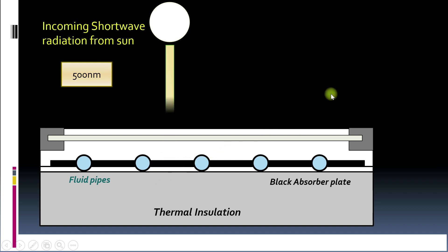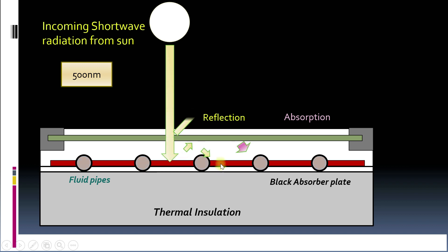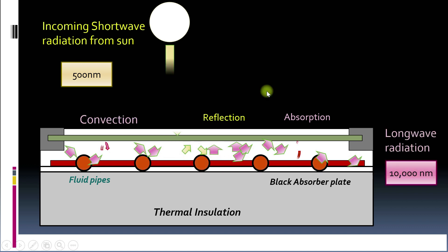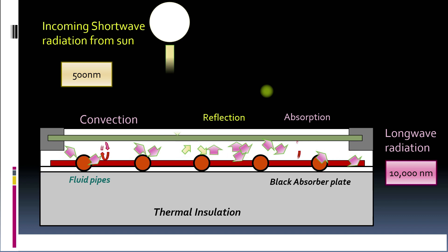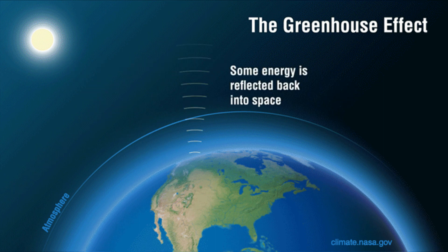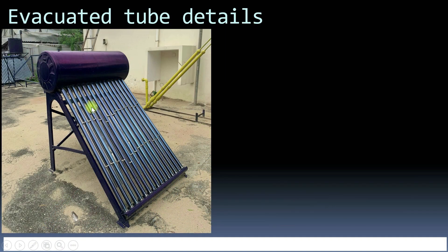In a glazed flat plate solar collector, when the sun's radiation falls on the glass, only a very small amount is reflected and absorbed by the glass — the rest is transmitted to the absorber. The temperature of the absorber starts rising. The long wave radiation emitted is reflected back from the glass and trapped inside the collector, continuing to heat the absorber. This is because glass is transparent to short wave radiation but opaque to long wave radiation — a phenomenon similar to the greenhouse effect, in which gases such as carbon dioxide trap heat, similar to the glass roof of a greenhouse.